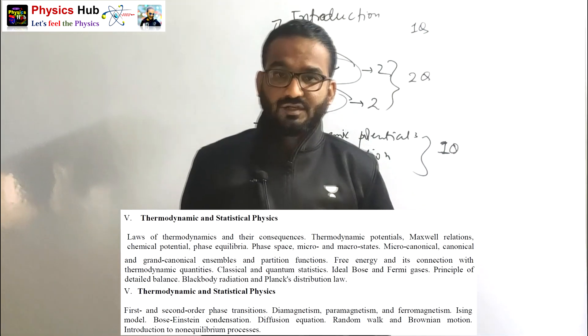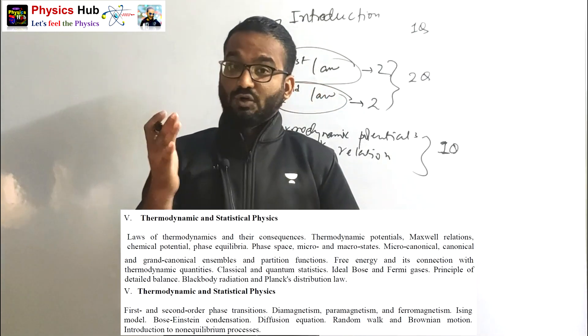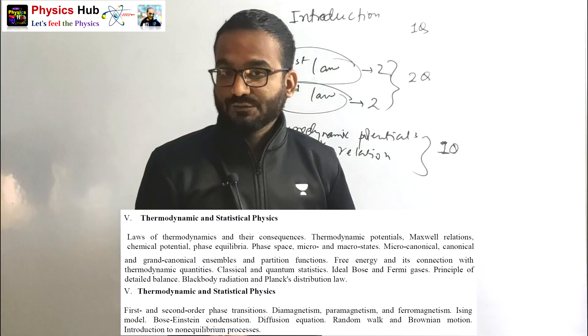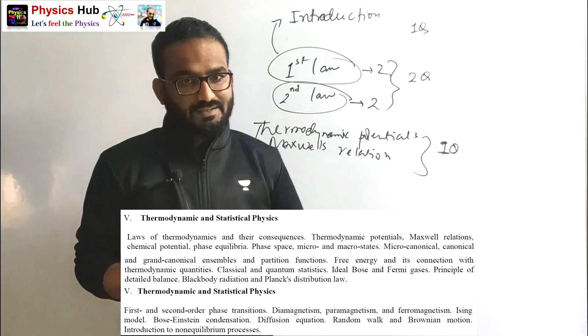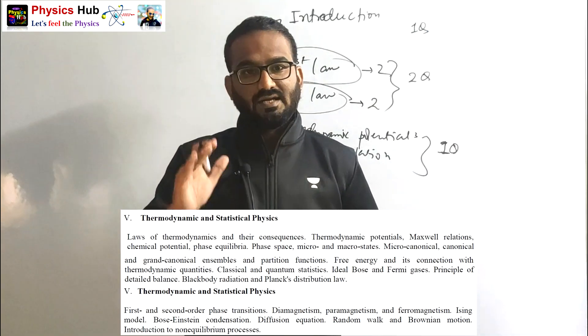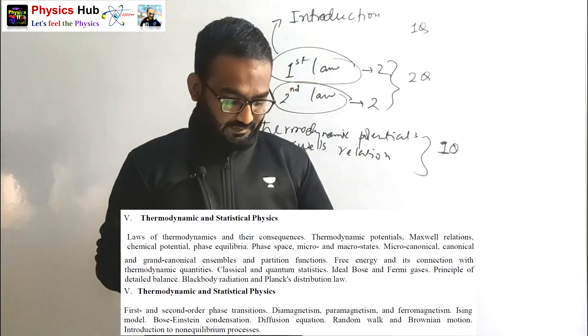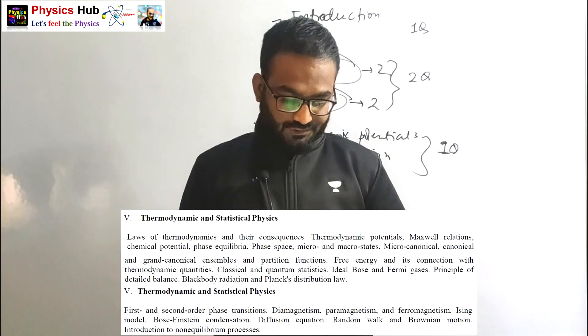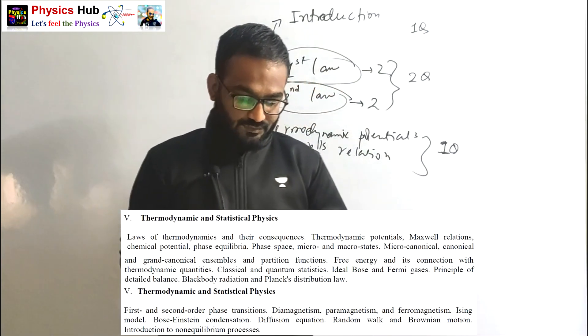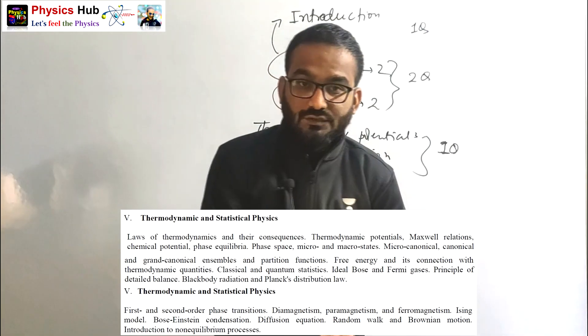And Ising model - it's very important and you can expect a 5 marks question. So Ising model we'll do, this is very easy. I have a standard note for this Ising model with a lot of questions. Then Bose-Einstein condensation, diffusion equation, random walk, Brownian motion, and non-equilibrium processes.